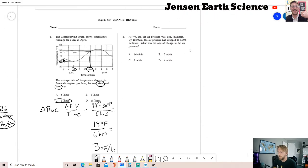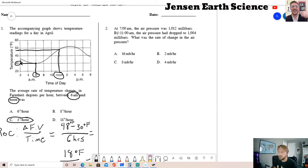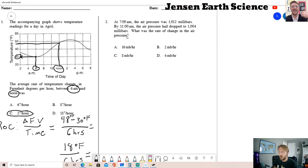Our last example, let's check out number two. This is a Regents example. At 7 a.m. the air pressure was 1,012 millibars. By 11 a.m. the air pressure had dropped to 1,004 millibars. What was the rate of change in the air pressure? This was a little bit easier because you don't have to incorporate a graph, it's basically just giving you the numbers to set up your formula. Let's take our formula: rate of change ROC is change in field value over time. Our change in field value would be the millibars, so I had 1,012.